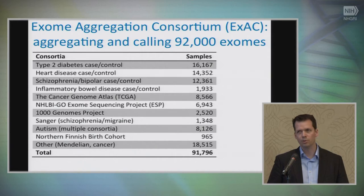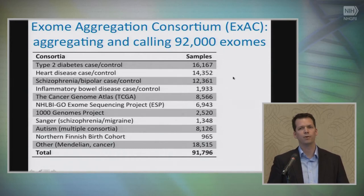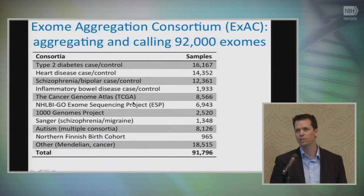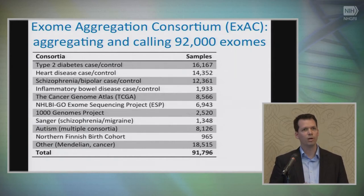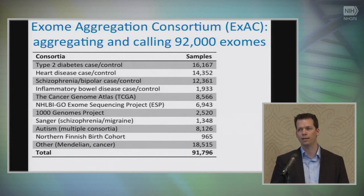Our first release, made public back in October 2014, started with a collection of raw sequencing data from 92,000 human exomes. These come from a whole range of different projects, with a lion's share of the data coming from large case-control studies of common complex diseases like type 2 diabetes, heart disease, and neuropsychiatric conditions. There's also data from TCGA — these are germline exomes only, not tumor exomes. We took roughly a petabyte — about 1,000 terabytes — of raw sequencing data from these 92,000 samples, pushed all of that data through the same processing pipeline at the Broad Institute, did joint variant calling across all samples, and that resulted in a single unified call set.